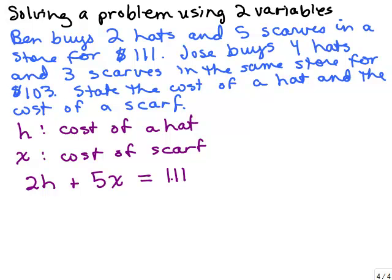Now let's look at the second equation for Jose. Jose buys four hats and three scarves. So he pays 4H for the hats, four hats at H dollars each. And he buys three scarves, so we add 3X for the cost of the scarves. And that's $103. So the equation is 4H + 3X = 103.